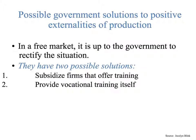They basically have two solutions. In a free market, it's up to the government to rectify this situation. They could subsidize firms that offer training — so if my school, Nido de Aguilas, were to send me off to training, they could get a subsidy from the Chilean government, which would incentivize them to do it more. Or the government itself could provide vocational training to teachers. The result of either solution would look like this.